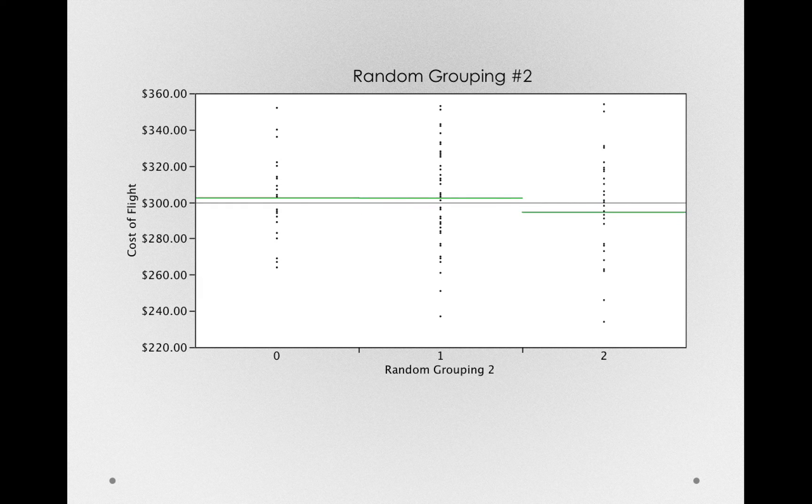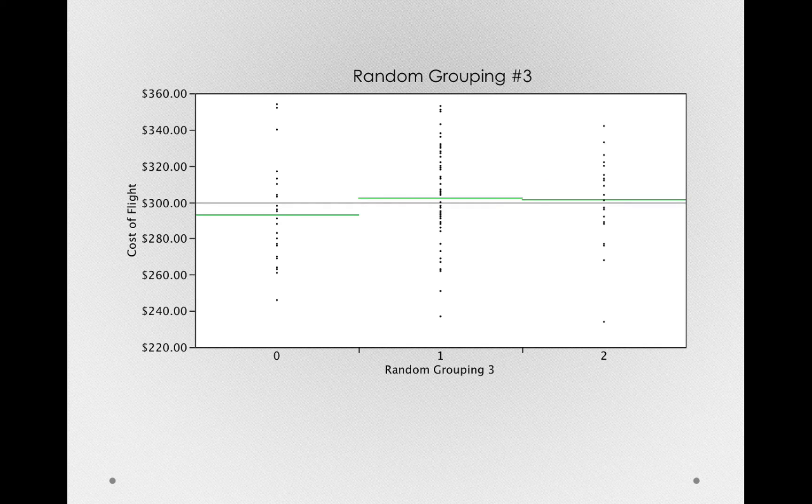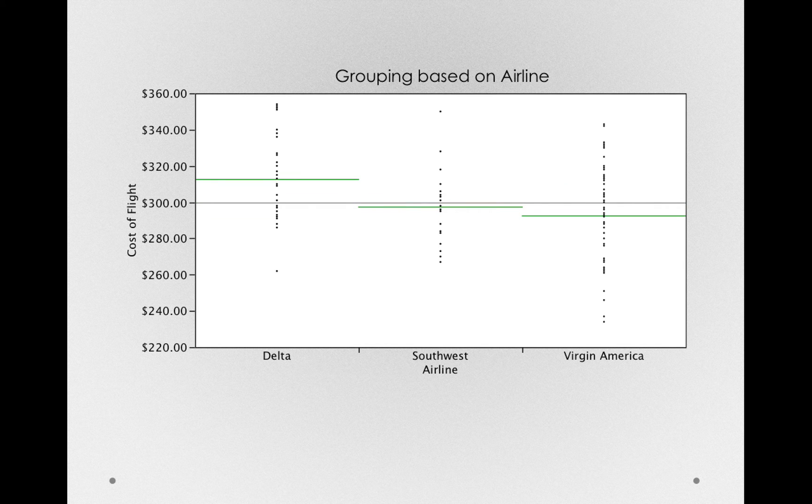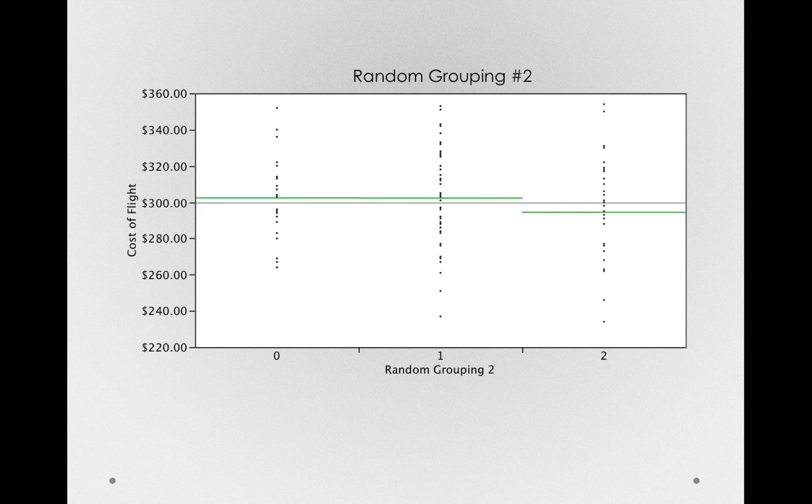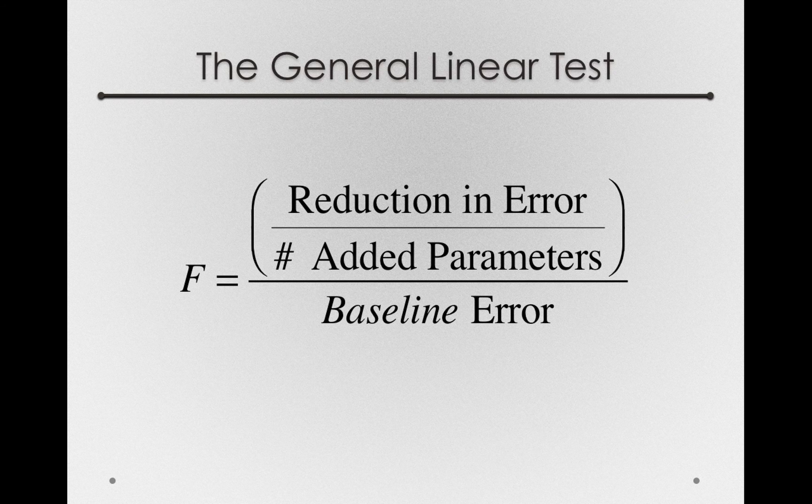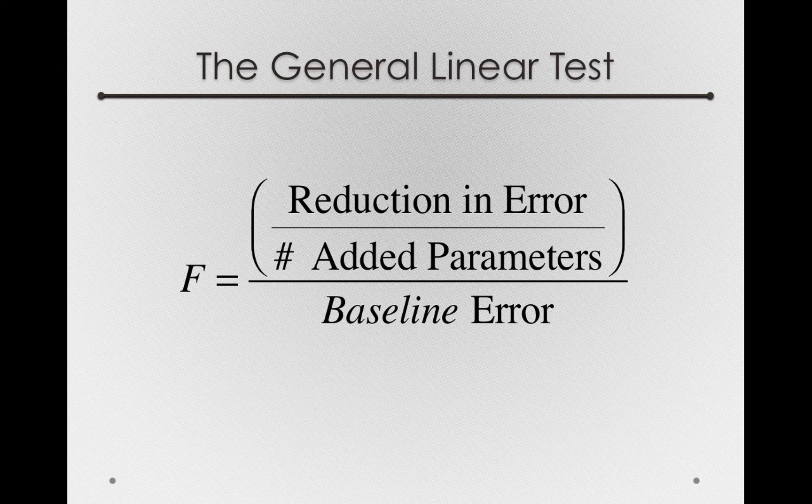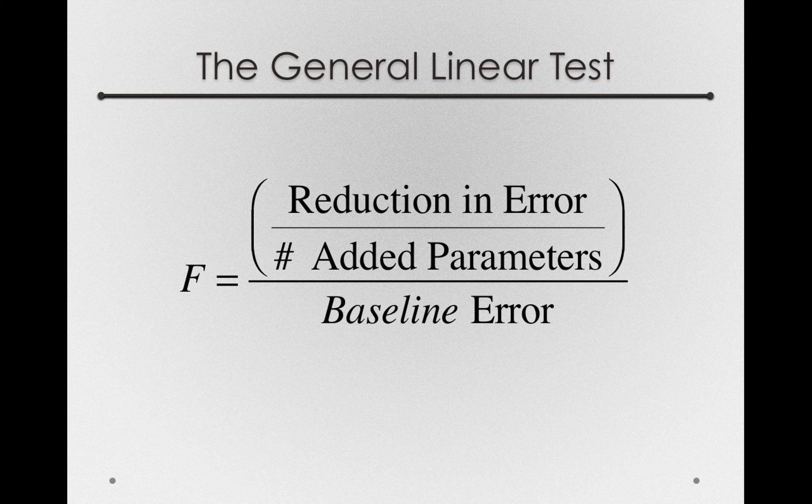So here I'm cycling through three random groupings. Notice that even with random groupings, we're still getting treatment offsets. So we want to know whether our airline grouping is more different, that is, explains more of the deviations in the data than simply random groupings would. So that's what our general linear test is doing, in essence. It's how much we've reduced error, which is to say added prediction, on the basis of the number of parameters we've added.